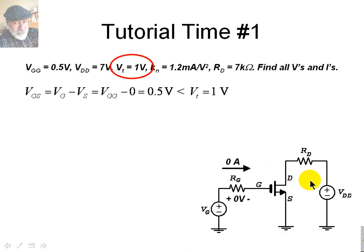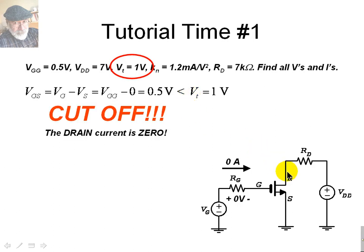So, VGS, half a volt, is below VT, the threshold voltage. The transistor is in cut-off mode and the current, the drain current, is zero. Because the current is zero, all the voltage VDD will be applied to VDS. So, VDS is directly VDD. There is no drop in RD. VDS, in this case, is 7 volts.